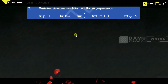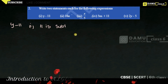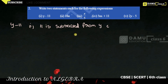The second question asks us to write two statements each for the following expressions. The first expression is y minus 11. You can write: '11 is subtracted from y,' or 'y is reduced by 11,' or 'y is subtracted by 11.'